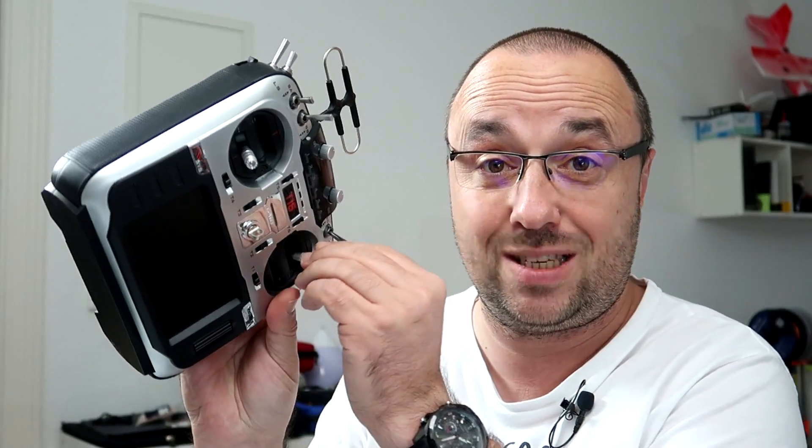If it's happening like once every few flights and then it settles down, then probably you really have nothing to worry about because this is how radio systems are working. There is uplink and there is downlink, and the transmitter is working as a transmitter when it's transmitting your radio signal, the value of the sticks and switches to the receiver, and then there is the receiver that sends back the telemetry.